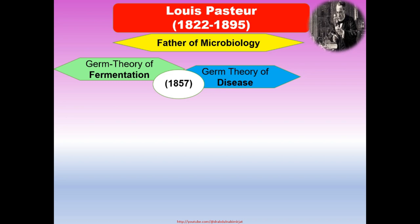At that time, many scientists believed that air converts the sugar in these fluids into alcohol. However, Pasteur did not accept this statement. He found that certain microorganisms called yeast convert the sugar to alcohol in the absence of air, and this process was called fermentation, which was used to make wine and beer.